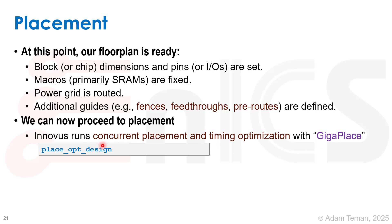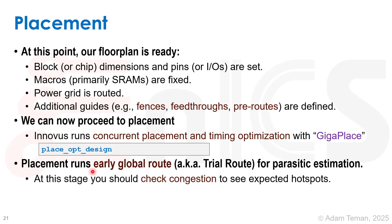We run the `place_opt_design` command, which runs concurrent placement and timing optimization using the Giga Place tool. In the past, we would run placement first — which was not timing-aware — and then run `opt_design -pre_CTS` separately. The difference is that `place_opt_design` iterates between placement and optimization together, whereas running `opt_design` on its own won't do heavy changes to placement.